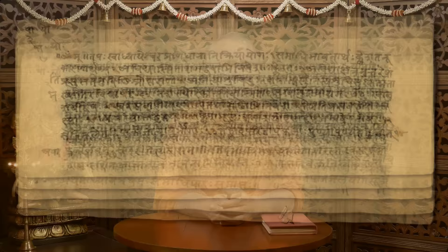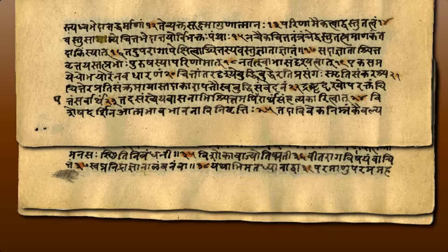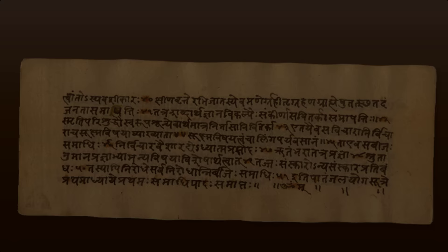His text contains 196 sutras, which are brief and often cryptic Sanskrit aphorisms that are explained in great detail by traditional commentaries. It's often pointed out that the word yoga is related to the English word yoke, with the meaning of union.